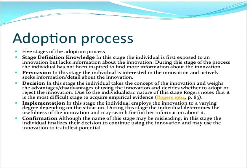So, the adoption process stages. Knowledge is when you're first exposed to an innovation but lack information about it — you'll be more inspired to find information about it. Persuasion is when the individual becomes very interested in the innovation and actively seeks information and detail about it. Then the decision process: you take the innovation and weigh the advantages and disadvantages of using it, research it, and decide whether to adopt or reject it. Implementation is when you decide to implement the innovation and determine its usefulness and search for further information. And confirmation is when you have made the decision to continue using it and to use it to its full potential.